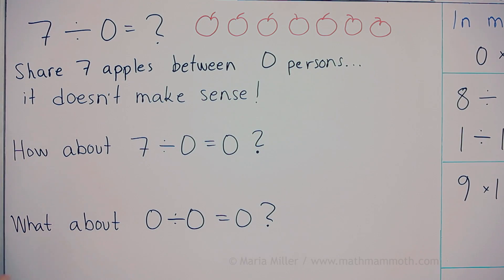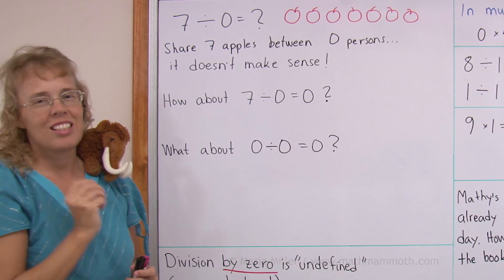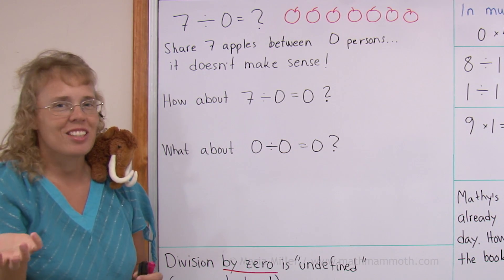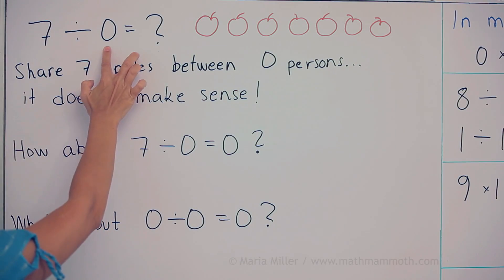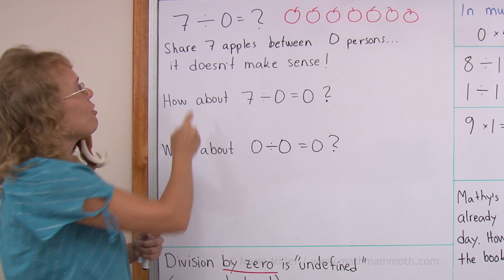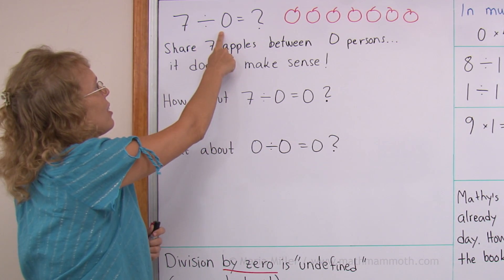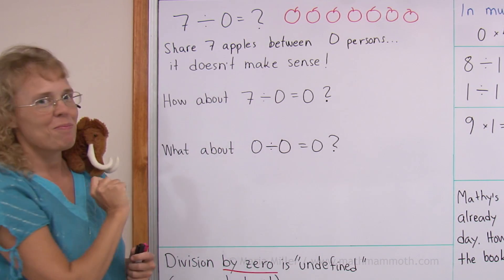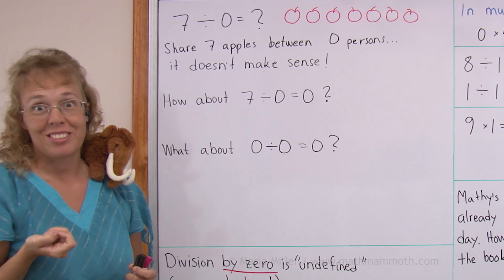The other way you could think about it is how many zeros are there in seven. And that doesn't make any sense either. You cannot count how many zeros are in seven. You could, if you had seven divided by one, you could ask how many ones are in seven and get the answer. But not with zero.